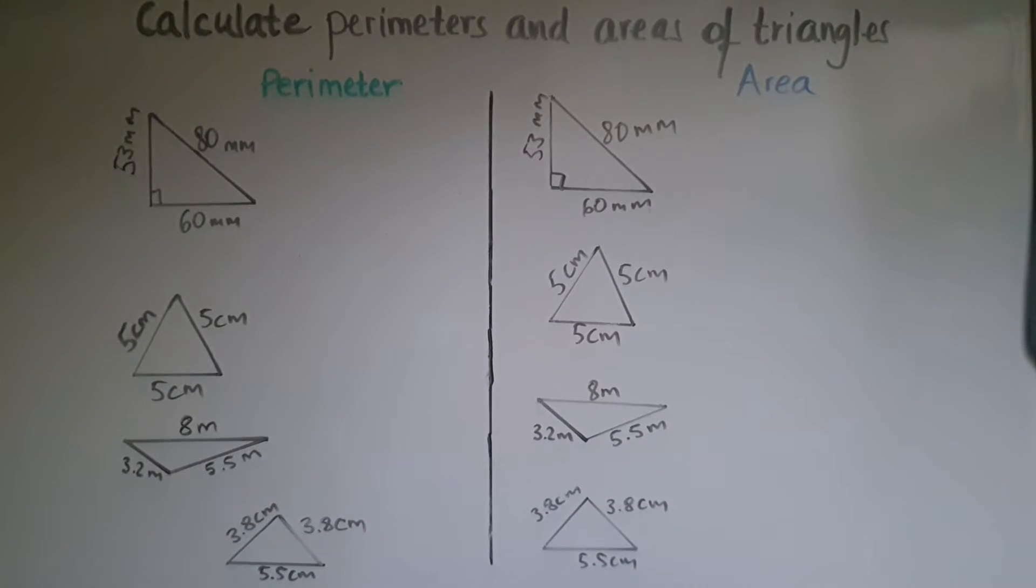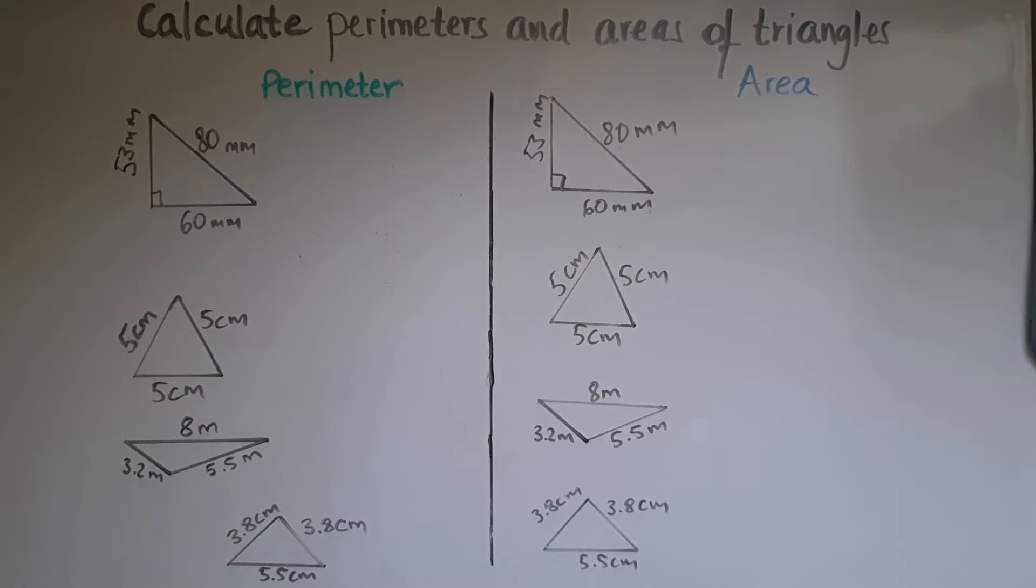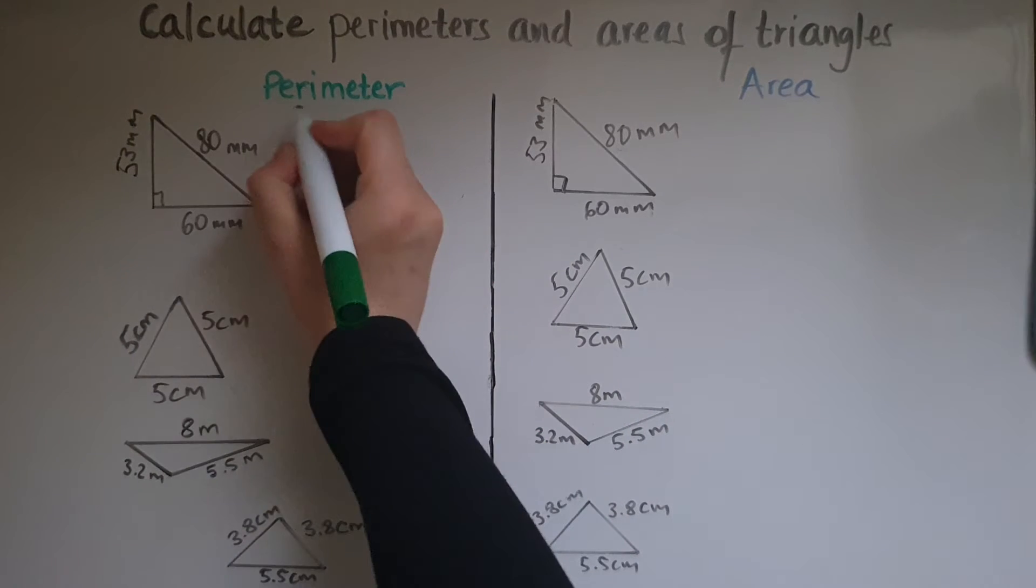In this video, we'll learn to calculate perimeters and areas of triangles. So what does perimeter mean? Perimeter is the rim.